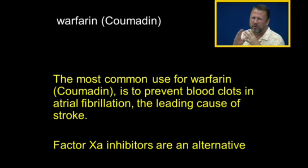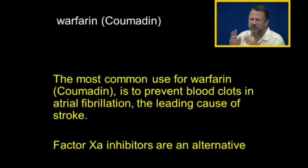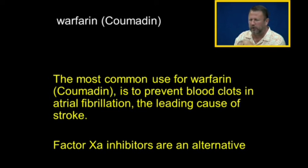The most common use for warfarin is to prevent blood clots in atrial fibrillation, which is the leading cause of stroke. When the atria fibrillate, they can form blood clots, and those blood clots will break loose and go to the brain, causing stroke. If somebody has a stroke or a mini-stroke — a TIA, a transient ischemic attack — one of the first things we'll do is get an EKG to see if it's caused by atrial fibrillation. That's the most common reason people take coumadin, and the factor Xa inhibitors are being used as an alternative.